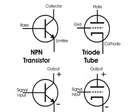Here's a drawing of both a transistor and a triode tube. I'm starting with the NPN transistor, and at the top you can see it's labeled collector, base, and emitter. The triode tube is labeled plate, grid, and cathode.